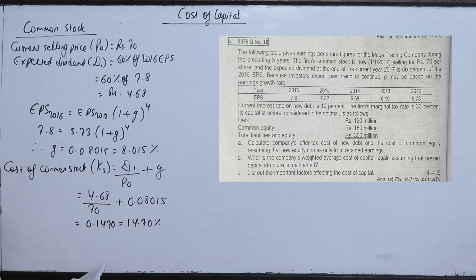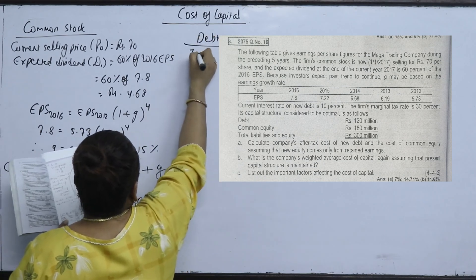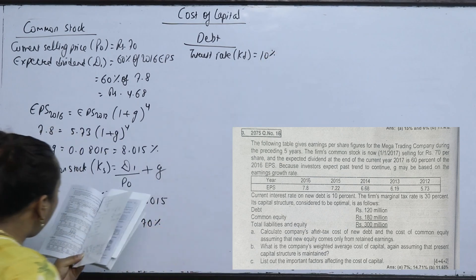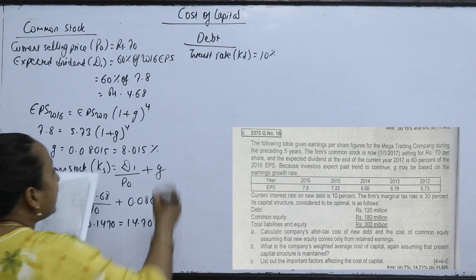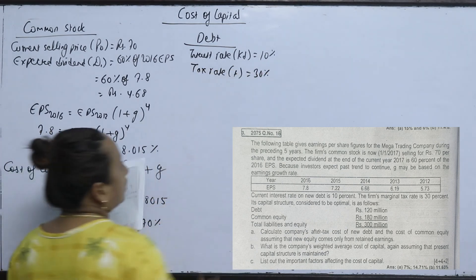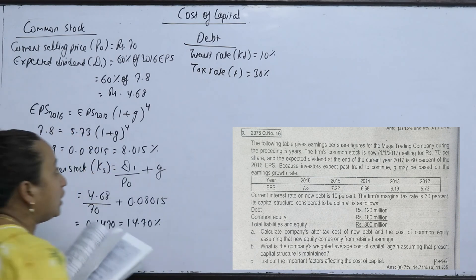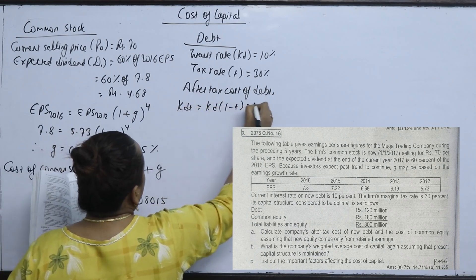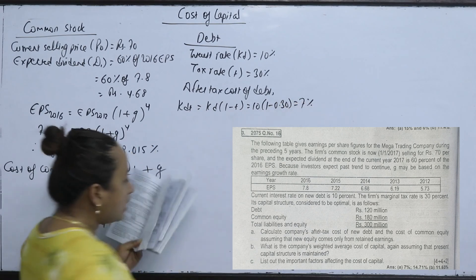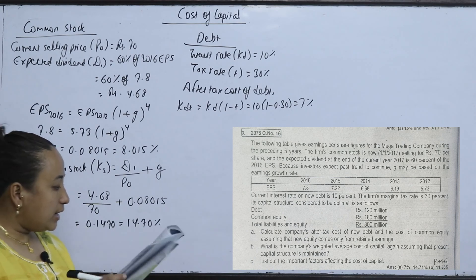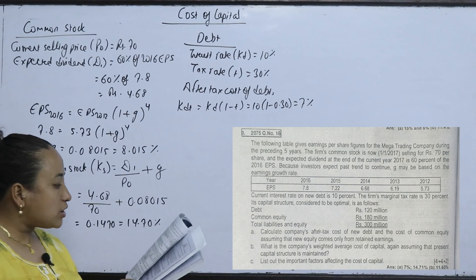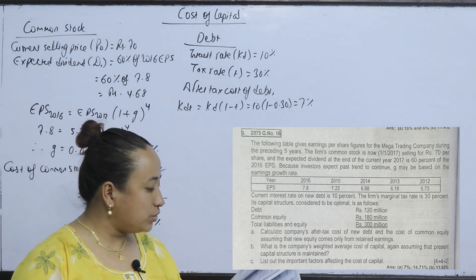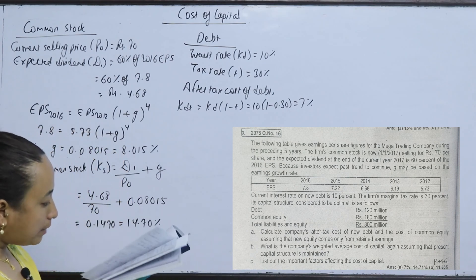The current interest rate on new debt is 10%, and the firm's marginal tax rate is 30%. The optimal capital structure is debt of 120 million and common equity of 180 million. We calculate the after-tax cost of debt and cost of common equity.